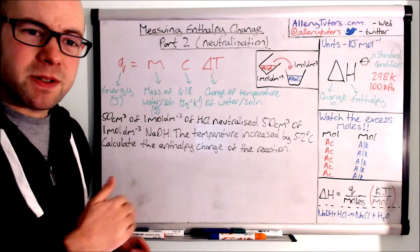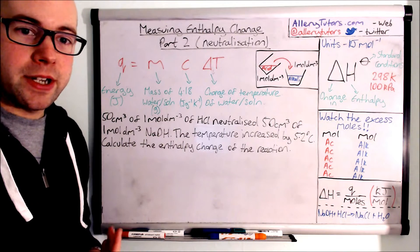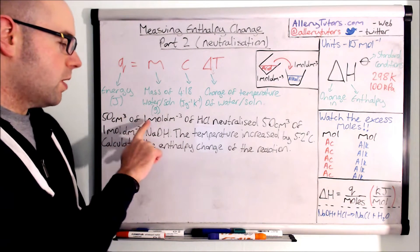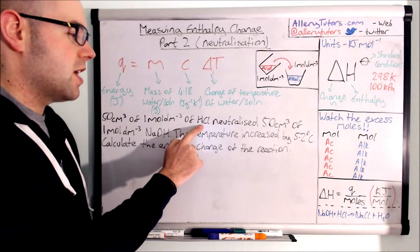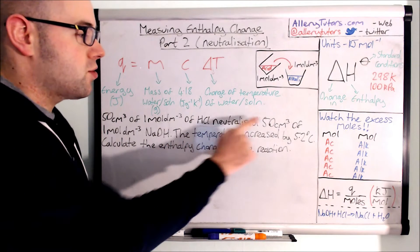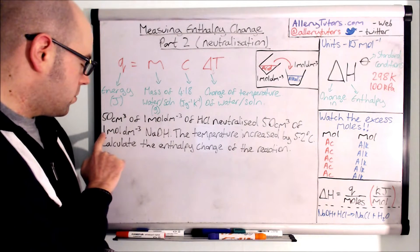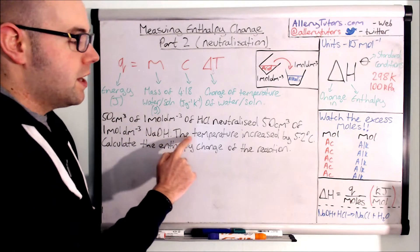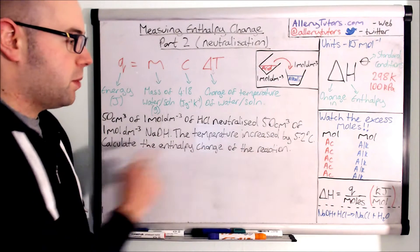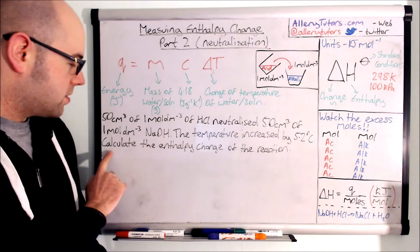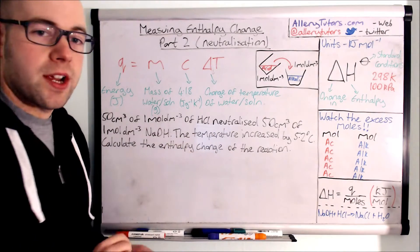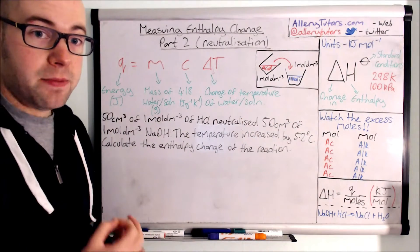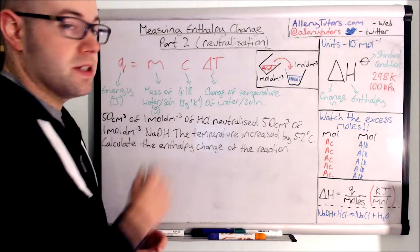We're going to look at an example question. 50 cm³ of 1 mol/dm³ HCl neutralized 50 cm³ of 1 mol/dm³ sodium hydroxide. The temperature increased by 5.2 degrees Celsius. We have to calculate the enthalpy change of the reaction — we want to work out delta H.